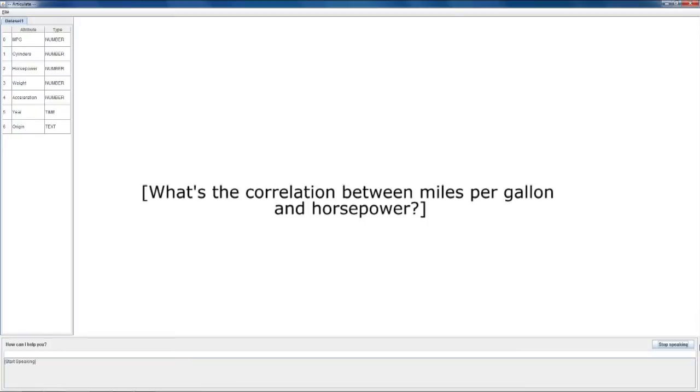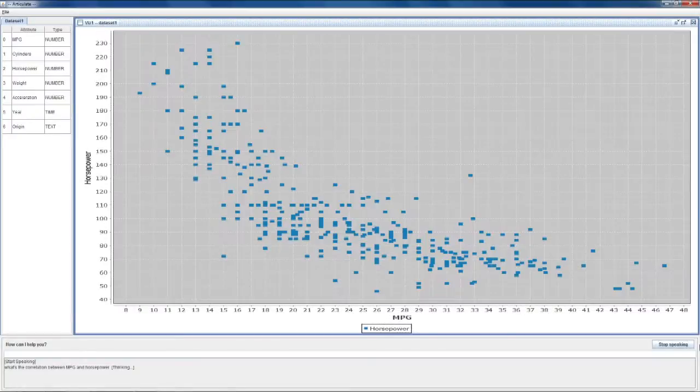What's the correlation between miles per gallon and horsepower? Notice that Articulate emphasizes data analysis and problem solving over direct manipulation of the visualization parameters, though the latter is also possible.